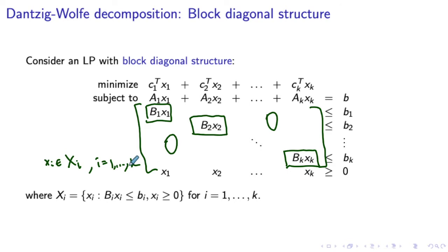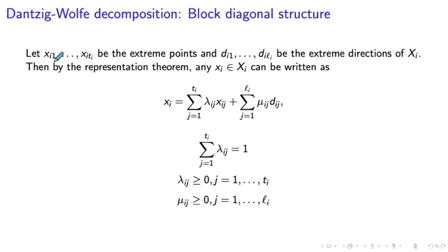Let's see what happens when we try to solve the problem with this block diagonal structure using Dantzig-Wolf decomposition. To write down the Dantzig-Wolf reformulation, we need to use the extreme points of the set X. In our case, the set X is represented by the sets Xi (capital), which are essentially independent of each other. So it makes sense to use the extreme points of these smaller sets Xis separately and represent a feasible point for Xi (capital) as a convex combination of extreme points of Xi combined with a linear combination of the extreme directions of Xi.